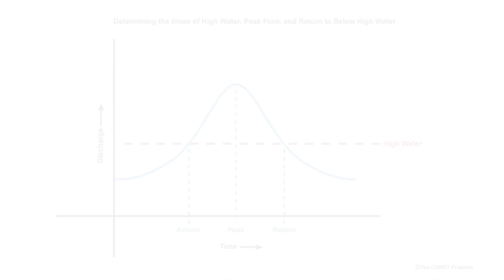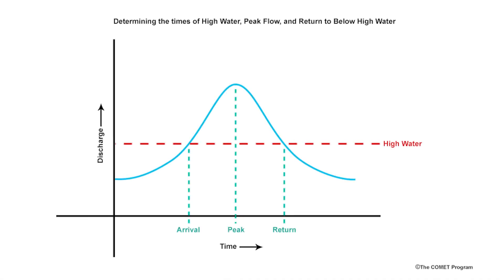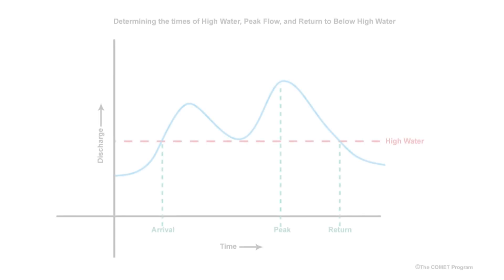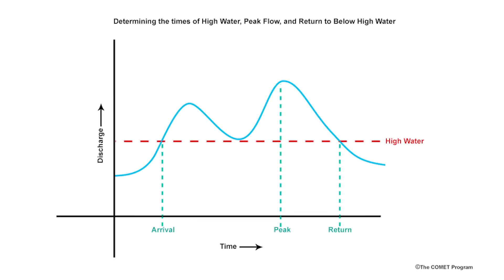The peak flow arrival time is depicted on this example hydrograph. The high flow arrival time and the return to below high flow time are also depicted. If two peaks occur within the forecast period, the time of the higher peak is used.